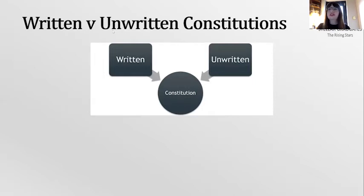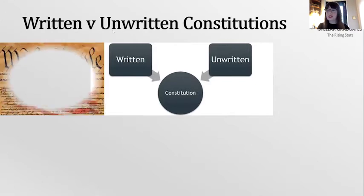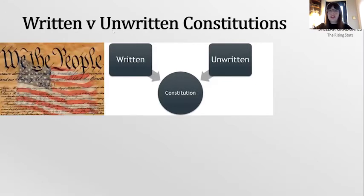There are provisions for amendments, because we want to update it — it can't be the same from 1700 to 2021. As mentioned, it's known as supreme law: it takes priority over any conflicting state law. The constitution is the primary document. That's a brief outline of the US situation.